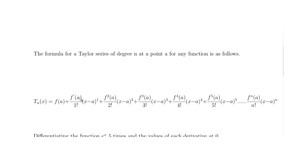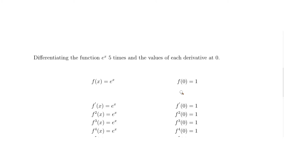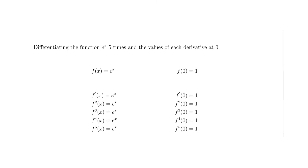We do this in a couple of stages, substituting formulas and values at each stage. First, we calculate the derivatives. We differentiate the function e to the x five times. E to the x is an excellent function to differentiate because no matter how many times you differentiate it, you end up with e to the x. So the first, second, third, fourth, and fifth derivatives are all e to the x — and the original function is also e to the x.